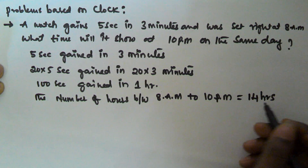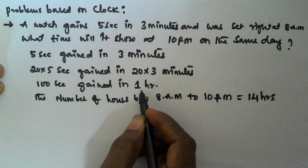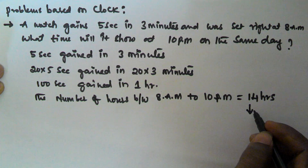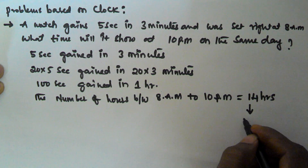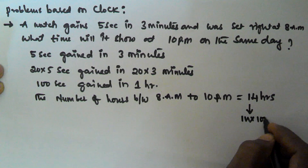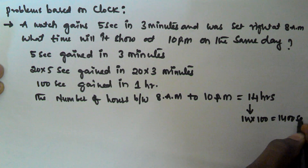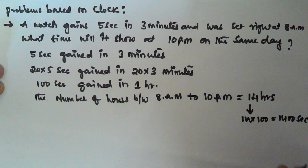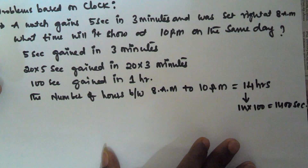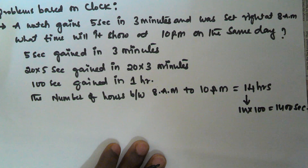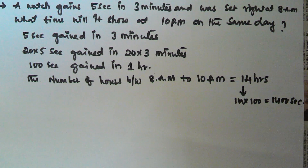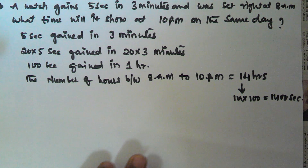This watch gains 100 seconds in 1 hour. So in 14 hours it will gain 14 × 100 = 1400 seconds from 8 am to 10 pm.